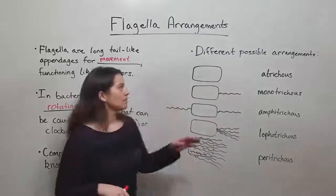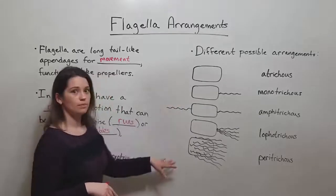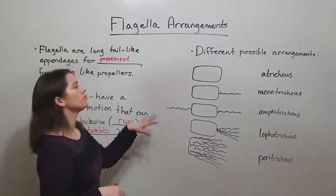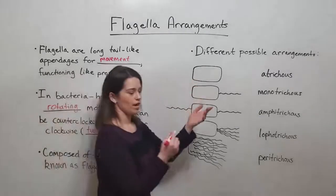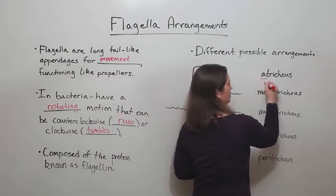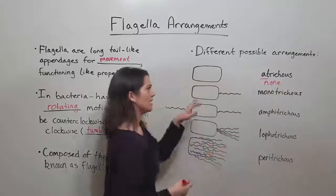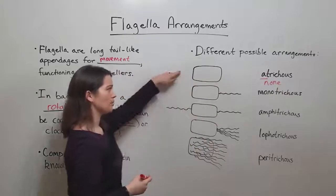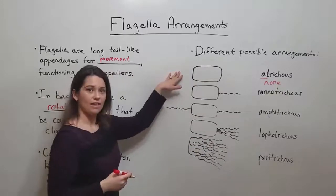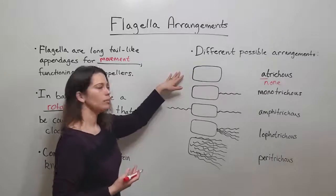Now let's talk about some of these arrangements. There are several possible arrangements. The first one we'll talk about is atrichus. The prefix 'a' means none, and so that's a cell that does not have any flagellum at all.